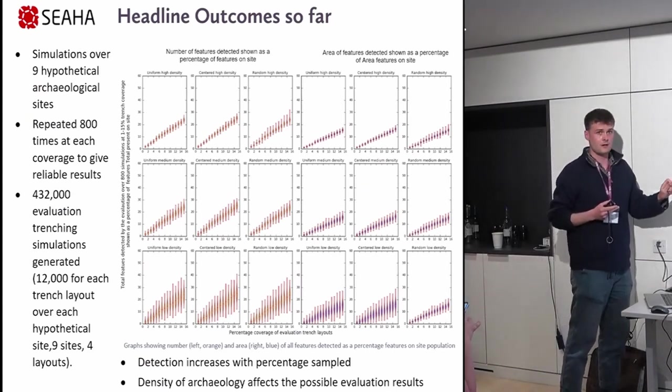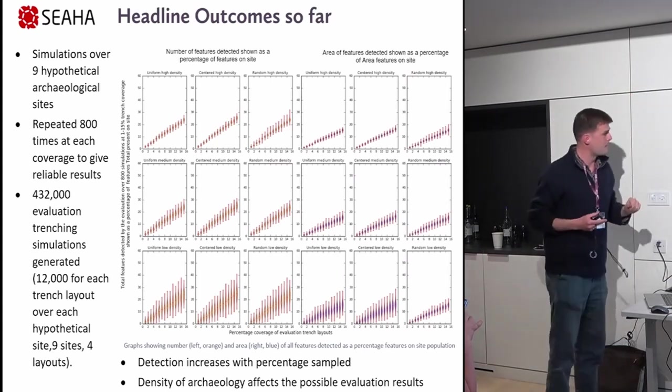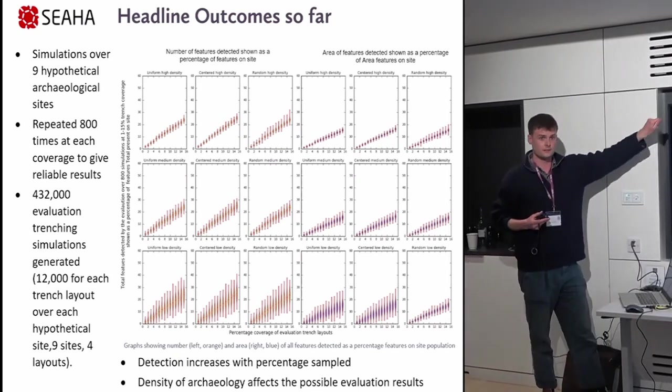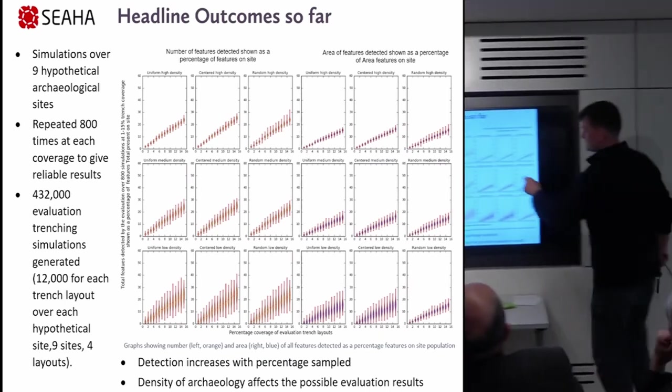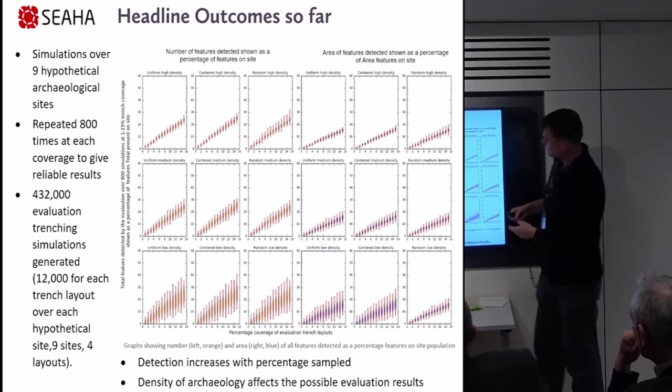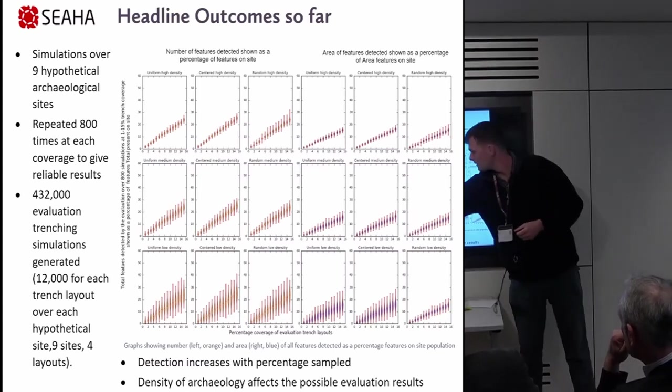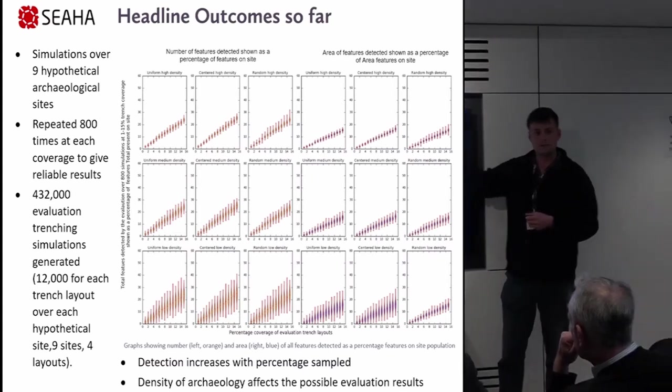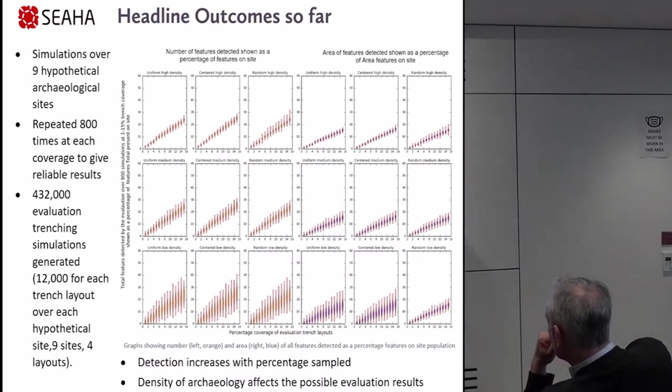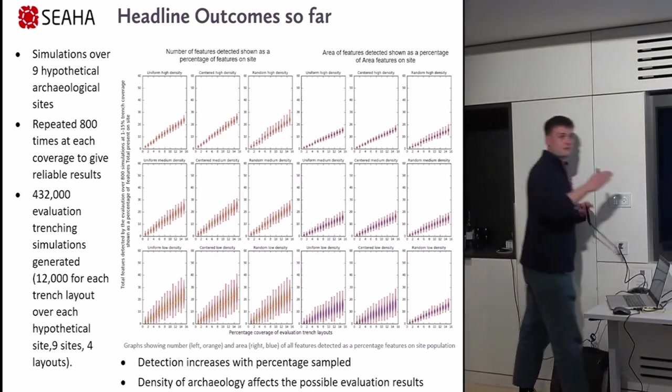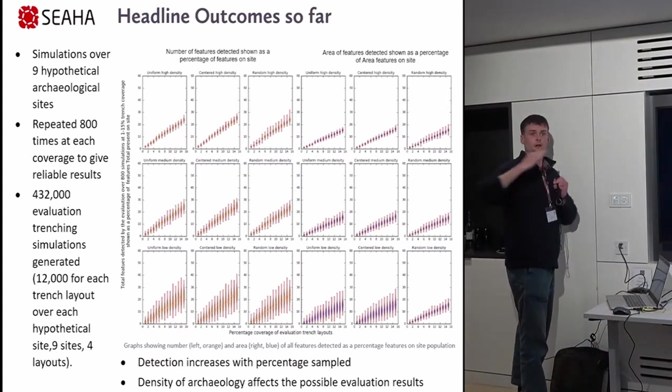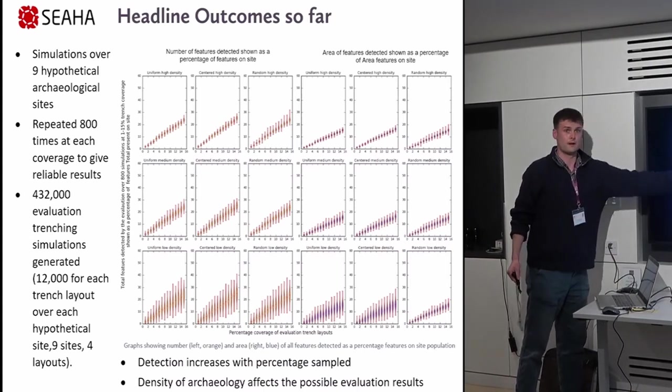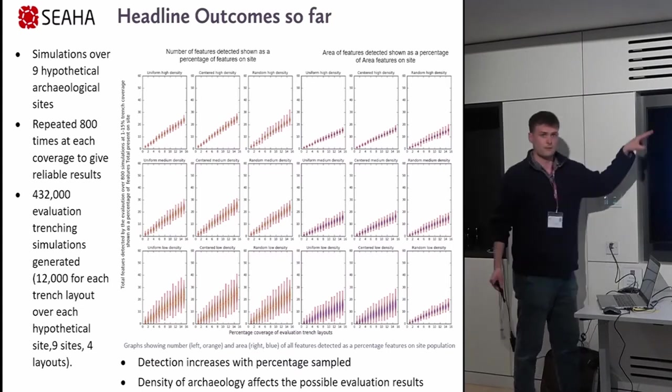This is just a standard grid layout of the kind of trenching going up and then horizontal. On each bar, this is 800 simulations over each site. Here's our previous sites: high density at the top, medium density in the middle, low density of features at the bottom. This is by number of features, this orange and red, and the blue is the area of your features in the trenches that you're seeing. Each bar is 800 simulations of the trenches laid out randomly, although keeping their configuration, and a different rotation at different coordinates over the site. This is also the total amount of features. This isn't by shape or size, this whole graph is just by all the features.